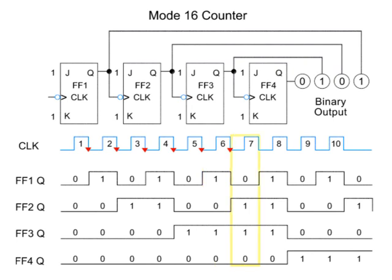Pulse 6 outputs 0110. Pulse 7 outputs 0111. The 8th pulse results in an output of 1000.